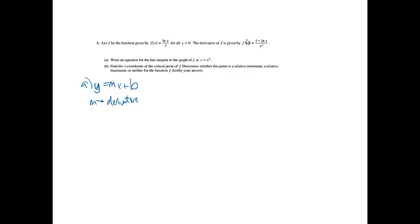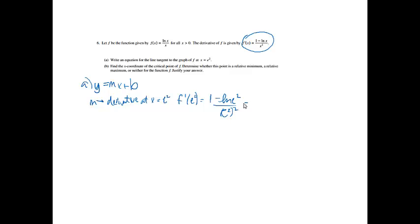They did give me the derivative, and they told me that was happening at x equals e squared. So I'm going to plug e squared into that formula. f prime at e squared equals 1 minus ln(e²) over (e²)². That equals 1 minus 2 ln(e) over e to the 4th. Since ln(e) equals 1, this gives me negative 1 over e to the 4th. So I've found my m.